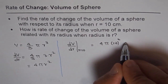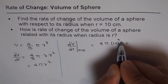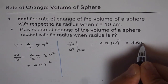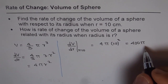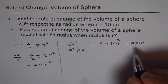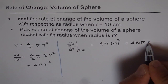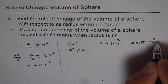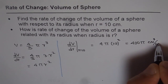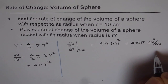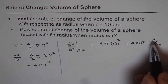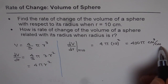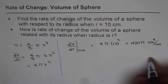we can say dV/dr when r equals 10 is equal to 4π(10)², and that is 400π. That is the rate of change, and the unit is centimeter cube per centimeter — that is the unit, rate of change of volume over change in radius.